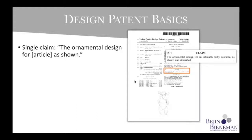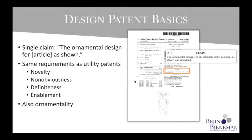Design patents always have just one claim, and it must follow this format: 'The ornamental design for blank as shown,' or 'The ornamental design for blank as shown and described.' In our example, the claim says the ornamental design for an inflatable baby costume as shown and described. The requirements for getting a design patent include the same requirements as utility patents: novelty, non-obviousness, definiteness — which we'll cover in detail in Enri Matita — and enablement.